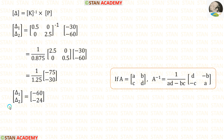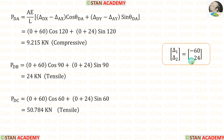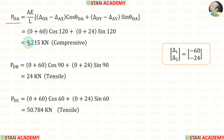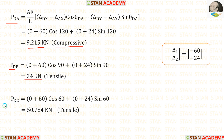After the calculations we obtain delta 1 and delta 2. Applying these values in the member force formula, for PDA we get a negative value — so it is compressive. For PDB we get a positive value — so it is tensile. And for PDC we also get a positive value — so it is tensile.